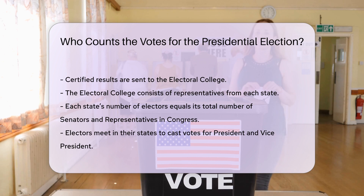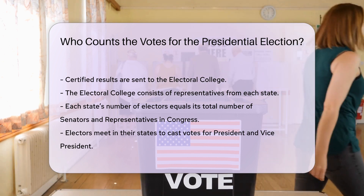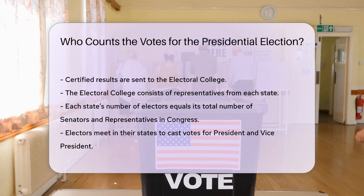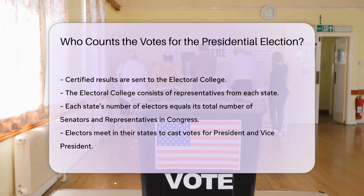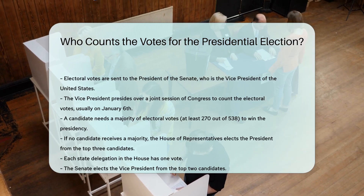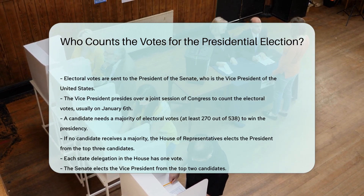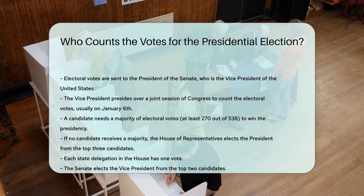These votes are then sent to the president of the Senate, who is the vice president of the United States. The vice president presides over a joint session of Congress to count the electoral votes. This session usually takes place on January 6th following the election. The candidate who receives a majority of electoral votes — at least 270 out of 538 — wins the presidency.